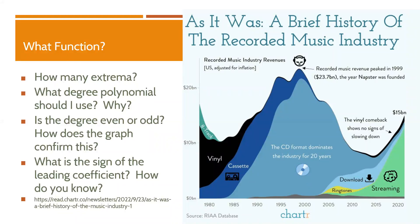In this video we're going to look at a graph from real life. We have this graph from Charter showing the history of the music industry — whether it was 8-track, vinyl, or cassette. To me it's a very interesting graph, and I see in it a polynomial shape.